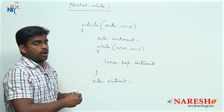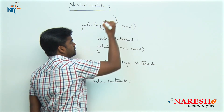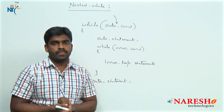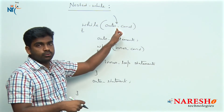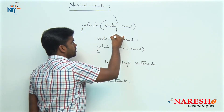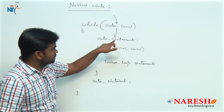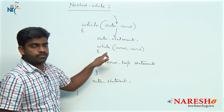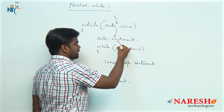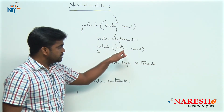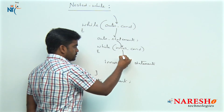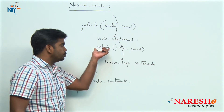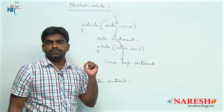Now look at the flow. First it will go and check the outer condition. Suppose if the outer condition has failed, directly it terminates. Suppose if the outer condition is true, the control moves inside — first it will execute all the outer statements you defined. After that it will check the inner loop condition. If the inner condition is true, the control will execute all the inner statements. After that it is not the end, because it is a loop — as long as the condition is true it will execute.